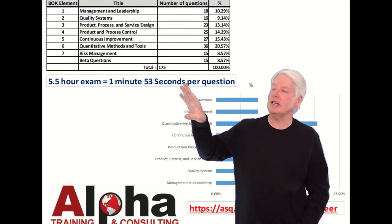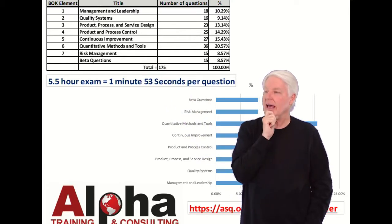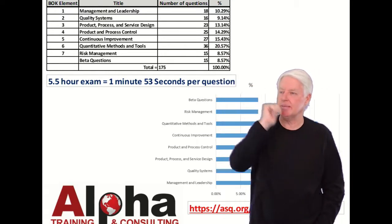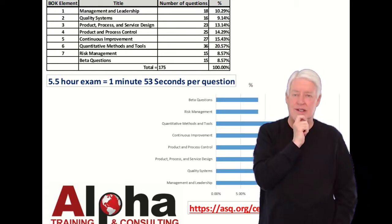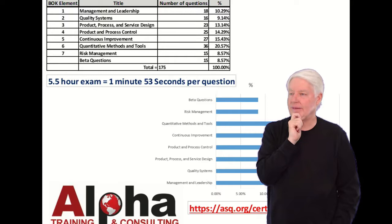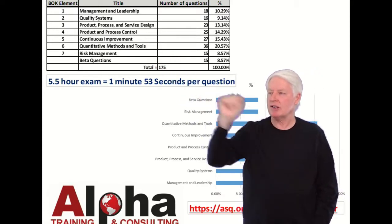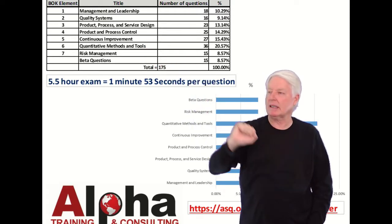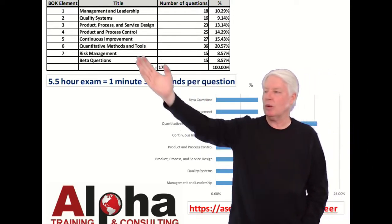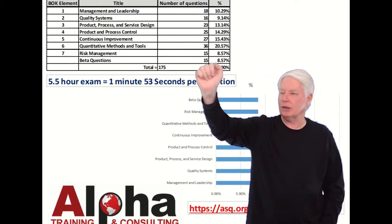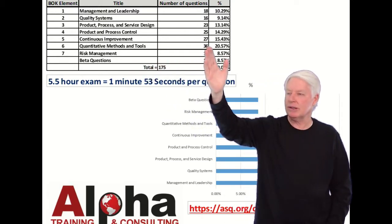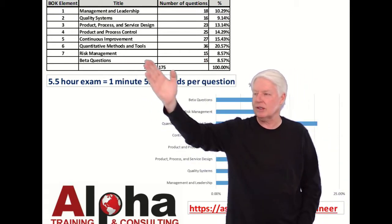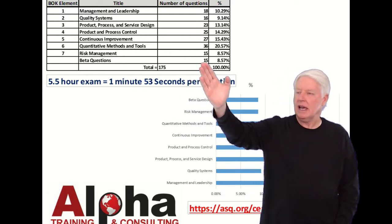The ASQ CQE body of knowledge comes in seven basic elements. The first one is Management and Leadership, with 18 questions, which is 10.29% of the test. There's Quality Systems at 16 questions, Product and Process Service Design at 23 questions, Product and Process Control at 25 questions, Continuous Improvement at 27 questions, Quantitative Methods and Tools at 36 questions, and Risk Management at 15 questions.